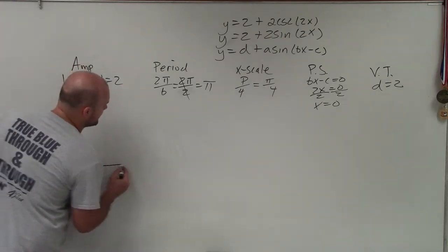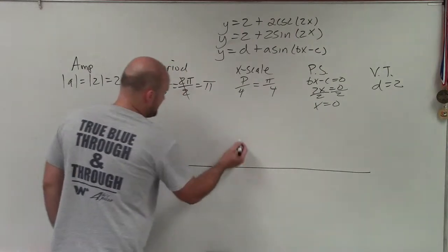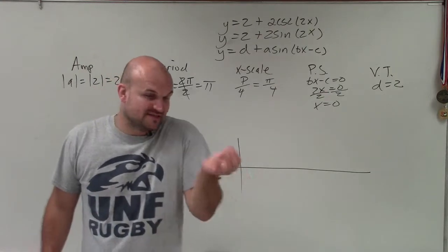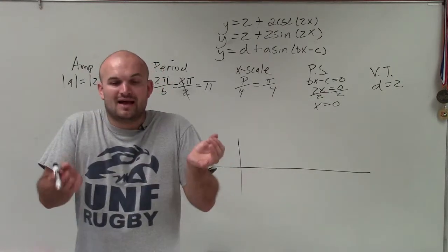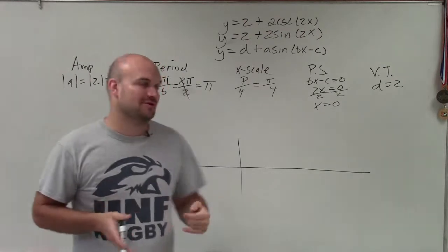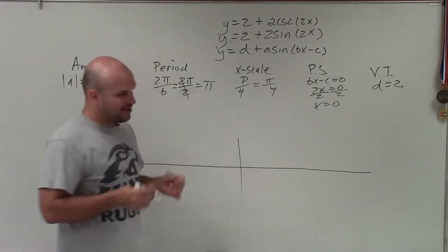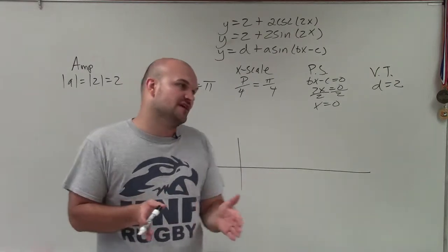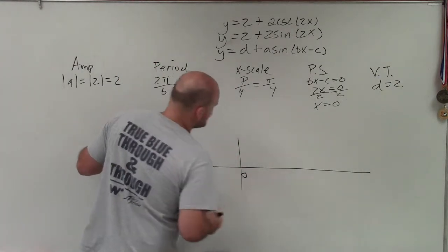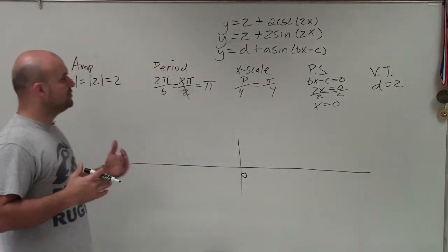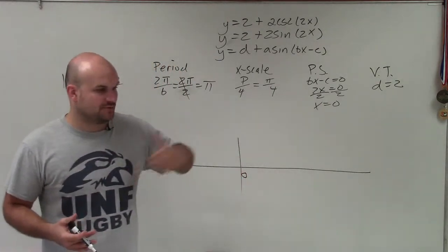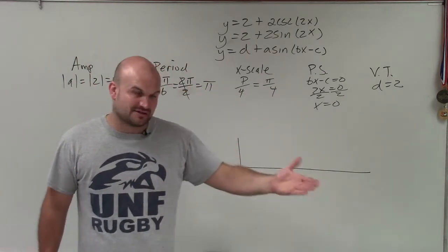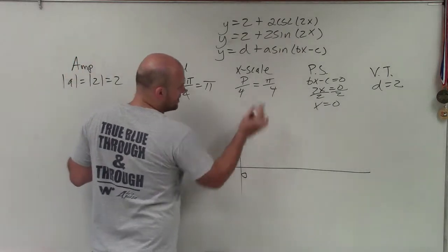I'm going to graph sine first. I'll start at 0 because my phase shift is 0, so it doesn't shift from the origin. The parent graph starts at an initial period at 0. Since my phase shift is 0, I start at 0. Now we follow the x scale. As we graph sine, it goes up to its maximum, intercept, minimum, x-intercept. Between each and every one of those important points is our x scale, so I'll start scaling my graph.